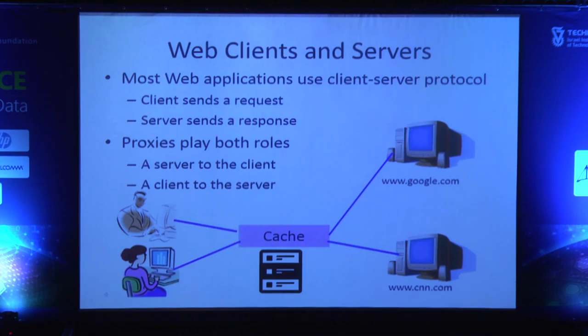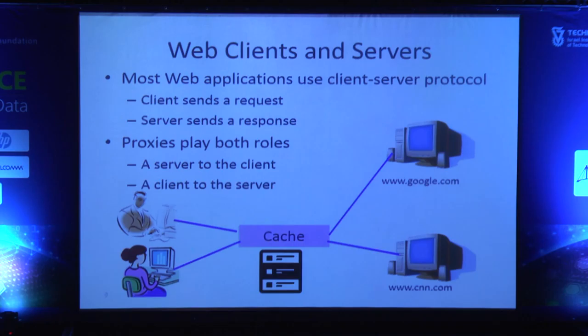Another kind of middle box, perhaps more complex, is a web cache. You want to speed up the network, so when Alice sends a message to Google, Bob can potentially reuse the reply. This requires local knowledge about which messages were transmitted in the network.